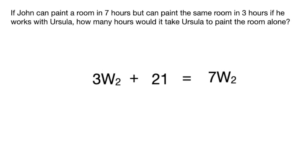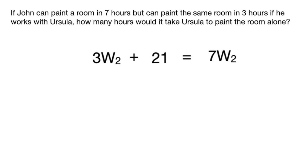Then just simply solve the way you usually would by subtracting 3w to the right side to get 21 equals 4w, and then divide by 4 on each side to get w equals 5.25 hours that Ursula would spend painting the room alone.